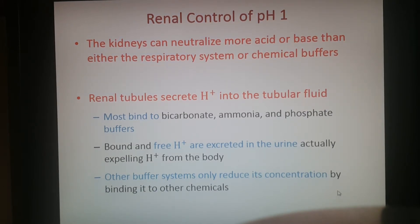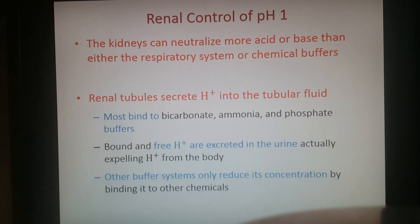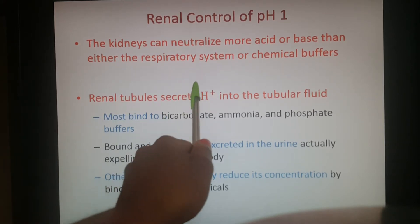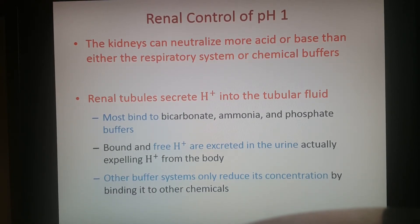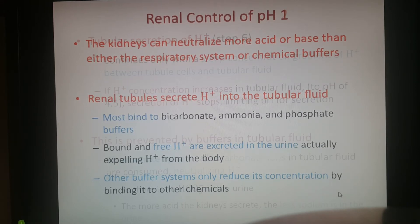With renal control of pH, the kidneys can actually neutralize more acid or base than either the respiratory system or your chemical buffers, since they directly excrete hydrogen ions or bicarbonate ions. In the first case, the renal tubules secrete hydrogen ions into the tubular fluid — removing them from the body — increasing the pH and making it more basic. Those hydrogen ions are excreted as part of the urine.